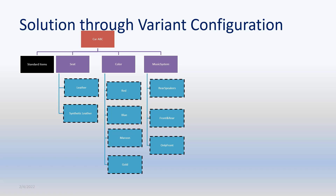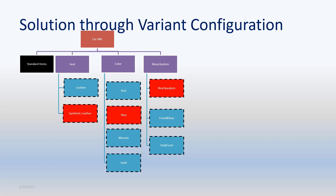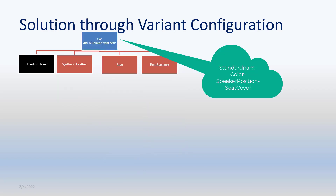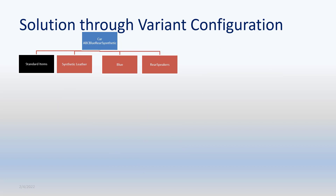The configuration logic may include selection conditions as well as constraints. For example, a constraint may state that the auto gear choice for the gear system can be made only for petrol-based vehicles. In this example, the customer selected synthetic leather for seat covers, blue color for the body of the car, and rear speakers. The bill generated from this selection looks as shown. This variant is identified uniquely on the basis of a naming convention, and the corresponding BOM and routing are mapped to this variant material.